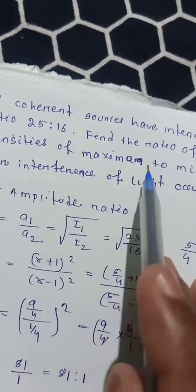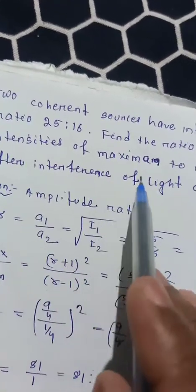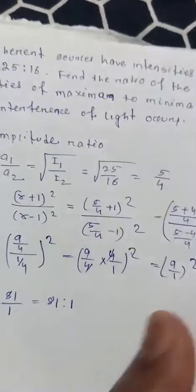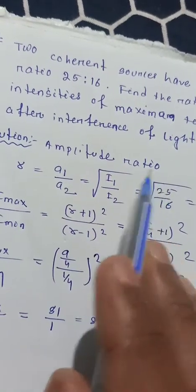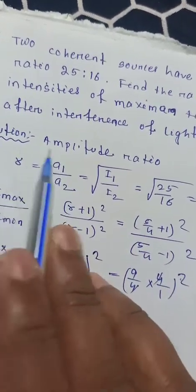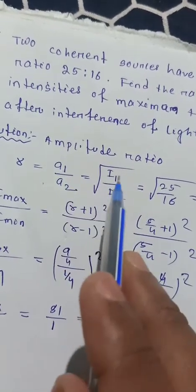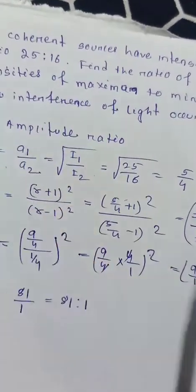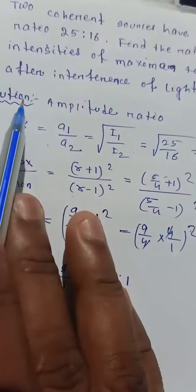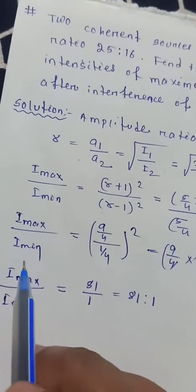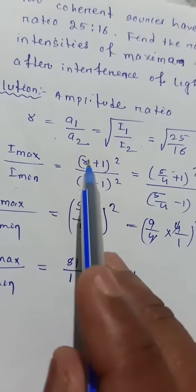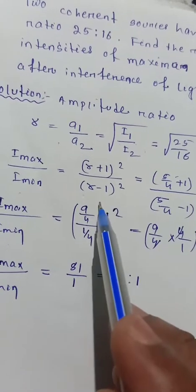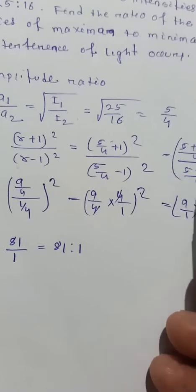So the answer is 81 is to 1. To summarize: two coherent sources have intensities in ratio 25 to 16; using the amplitude ratio formula r = √(I1/I2) = 5/4, and applying I_max/I_min = (r+1)²/(r-1)², we get the ratio of maximum to minimum intensity as 81 to 1.